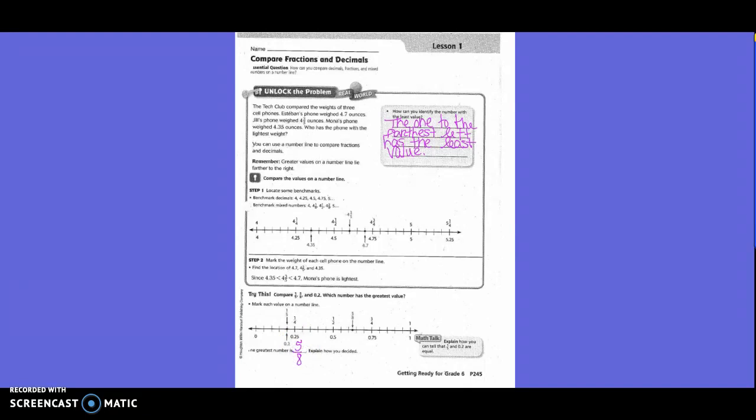Explain how you decided. So what did we say? 1 fifth and 2 tenths are equal, so they kind of cancel each other out. And then that means 5 eighths is higher.